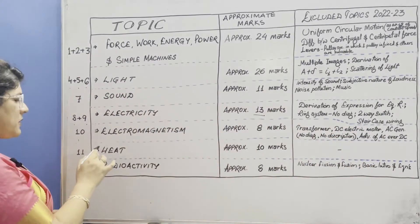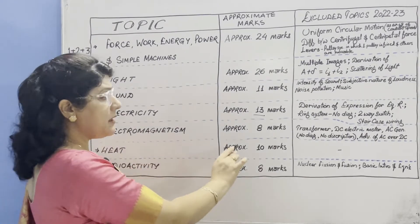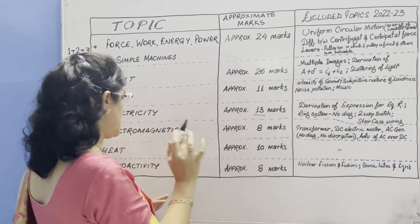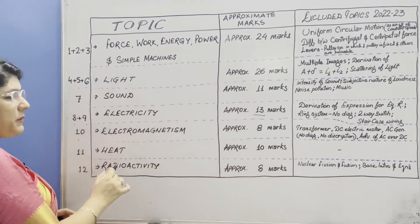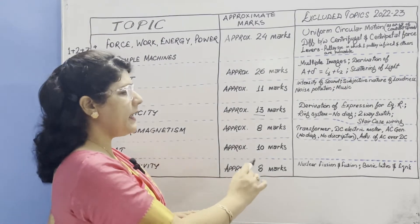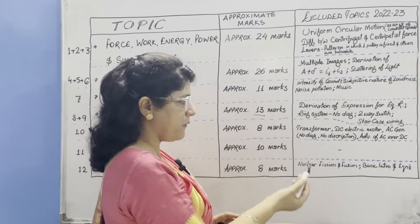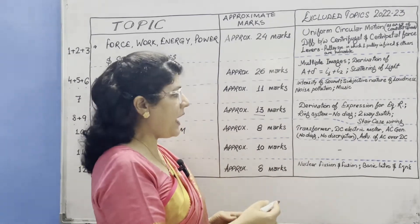From chapter 11 which is topic heat, approximately 10 marks and no reduced topics from this chapter. Last topic is radioactivity which is chapter 12 carrying approximately 8 marks, and excluded topics are nuclear fission and nuclear fusion - basic introduction and equation.